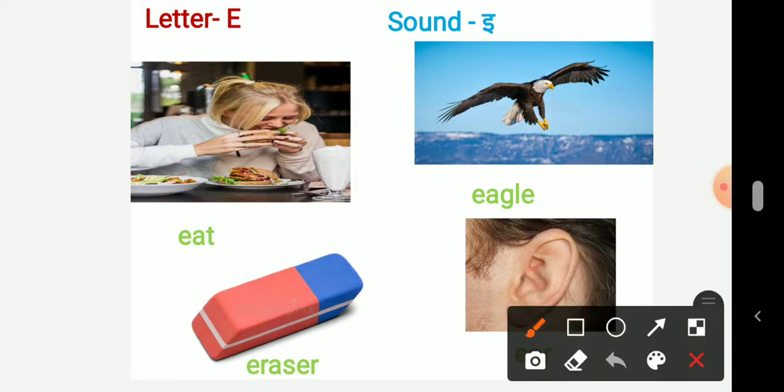Now first is eat. What is the girl doing in the picture? She is eating. Eat. E-A-T, eat. So the starting sound of the word is E. E, eat.